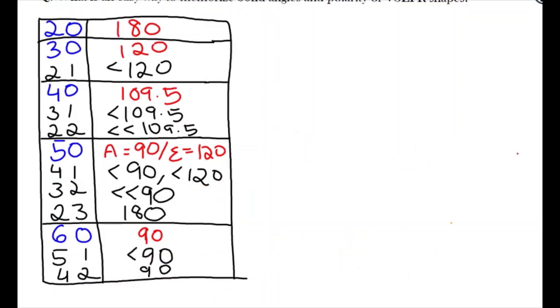For the row 3-2, it's less than less than 90 only, while 2-3 is 180, and the row 4-2 is only 90, with no less than signs.